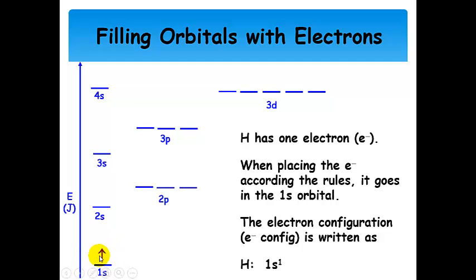I have this electron shown as spin up, but it doesn't matter if it's spin up or spin down — both have the same energy. Often you'll just see spin up, but spin down is equally correct. The electron configuration we write for hydrogen is 1s¹. The principal quantum number is 1, the letter s is the orbital type, and the superscript 1 is the number of electrons. Since hydrogen has one electron, the electron configuration is 1s¹.